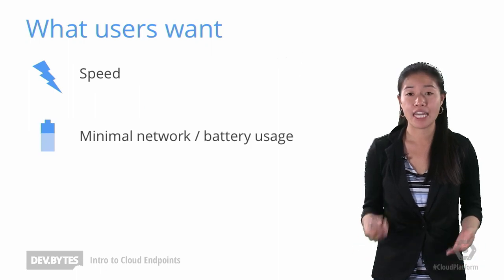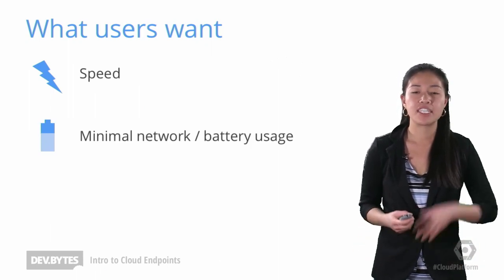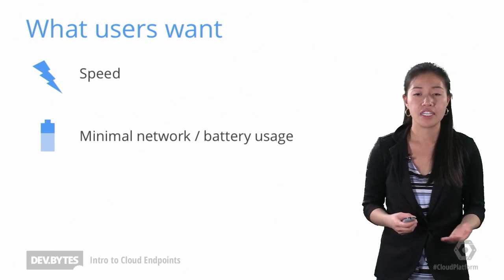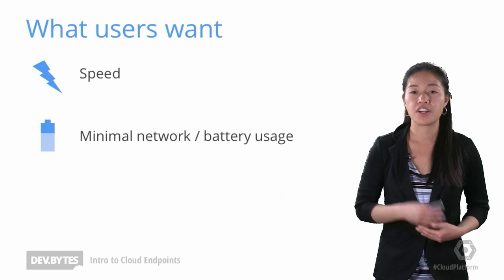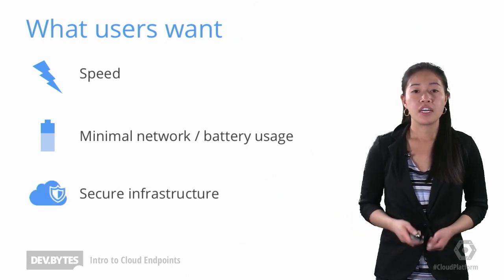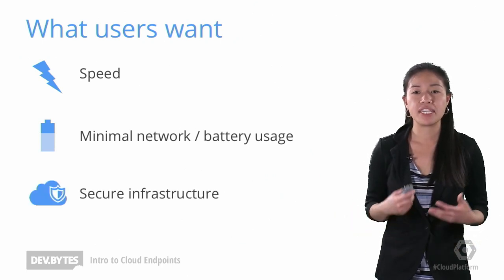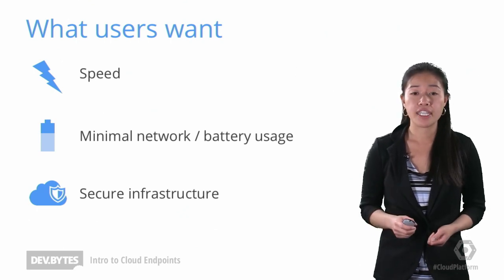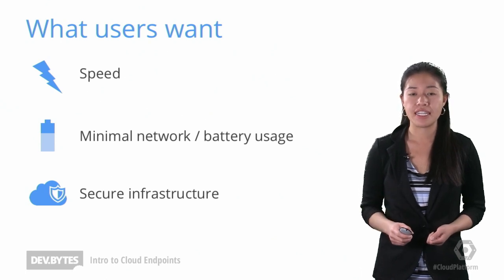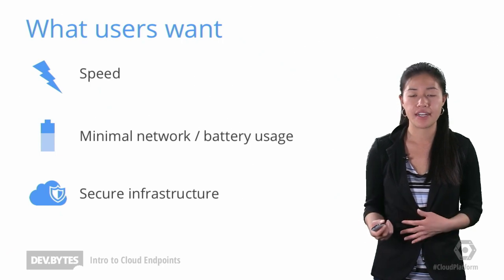Users also care about minimizing network usage, which impacts their bill, as well as minimizing battery usage. Therefore, once we serialize the data, we compress it for efficient transfer across the network. Users also want peace of mind that their data is being kept and transferred as securely as possible, so all requests are sent over HTTPS, and we have OAuth 2 support built in to authenticate and authorize users to access the appropriate data.